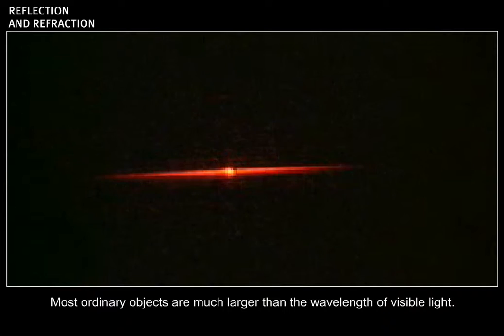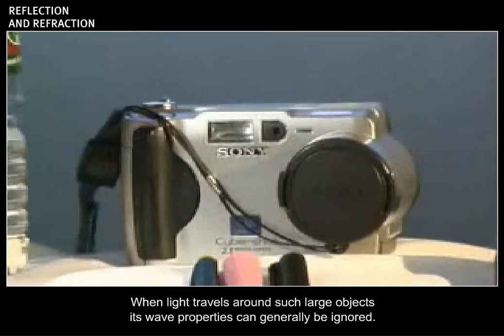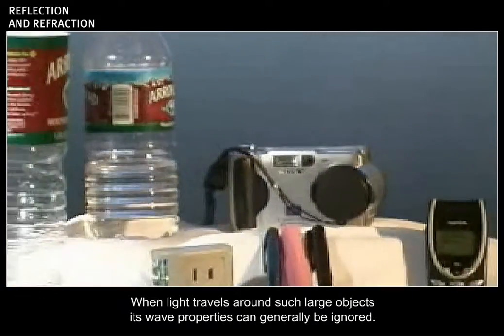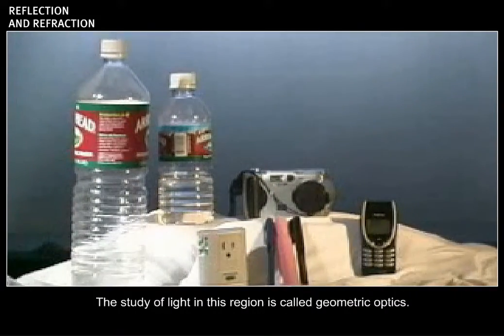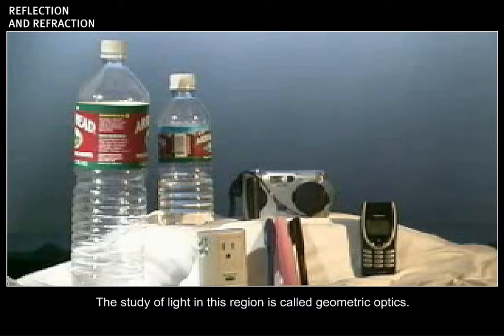Most ordinary objects are much larger than the wavelength of visible light. When light travels around such large objects, its wave properties can generally be ignored. The study of light in this region is called geometric optics.